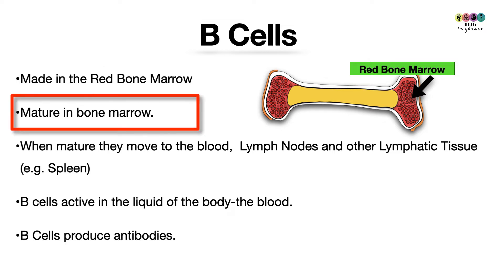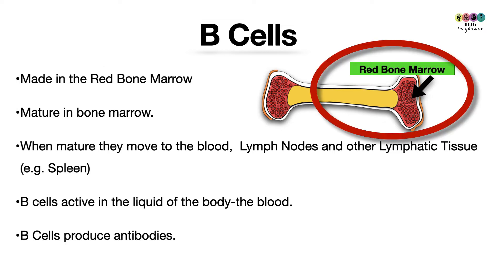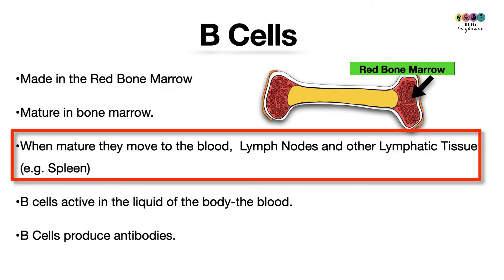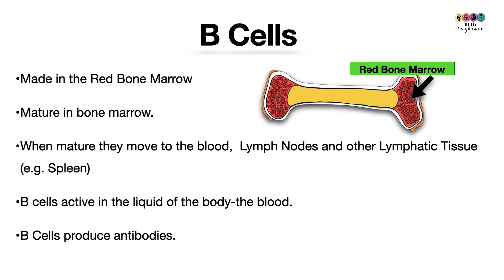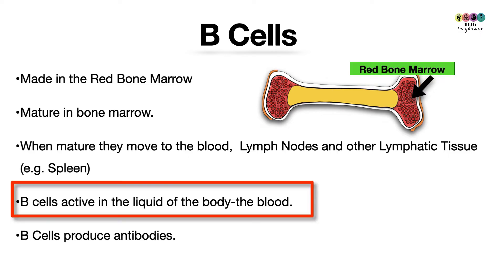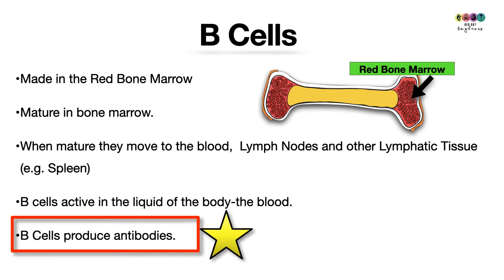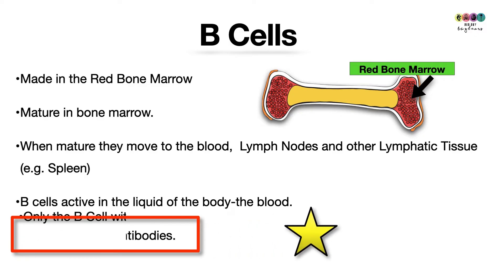B cells are made in the red bone marrow and they mature in the red bone marrow — that's really important, and you can see where it is in the diagram. When they are mature they go into the blood, and they can be found in the lymph nodes and other lymphatic tissue like the spleen. B cells are active in the liquid part of the body and they produce antibodies, so just associate B cells with antibody production.